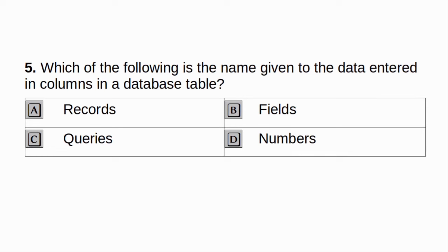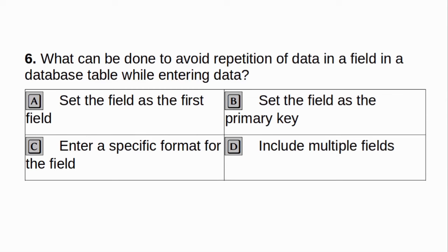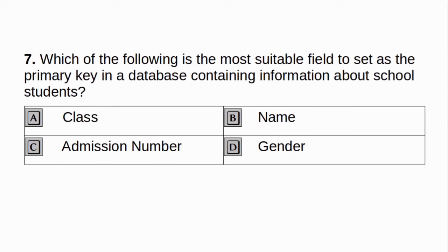Which of the following is the name given to the data added in columns in a database table? A. Codes. B. Fields. C. Queries. D. Numbers. Answer: B. Fields. What can be done to avoid repetition of data in a field in a database table while entering data? A. Set the field as the first field. B. Set the field as the primary key. C. Enter a specific format for the field. D. Include multiple fields. Answer: B. Set the field as the primary key.